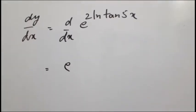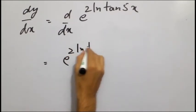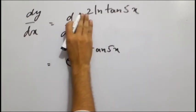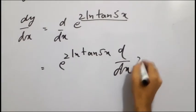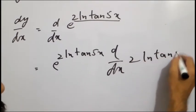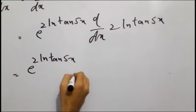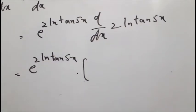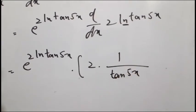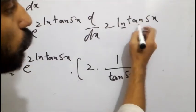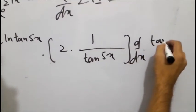e raised to power same — exponential function का जो derivative होता है, same value आता है। तो e raised to power 2 natural log of tan 5x वैसे ही आएगा। अब exponential का नहीं बल्कि इसकी जो power है — 2 natural log of tan 5x — उसका दुबारा से derivative लेंगे: d over dx into 2 natural log of tan 5x। 2 constant है, बाहर चला जाएगा। natural log का derivative one over x — तो यह tan 5x हो जाएगा। natural log का derivative ले लिया, अब पीछे जो value बचती है — d over dx into tan 5x — उसका दुबारा से derivative लेंगे।